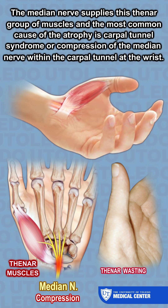The median nerve supplies the thenar group of muscles, and the most common cause of the atrophy is carpal tunnel syndrome, or compression of the median nerve within the carpal tunnel at the wrist.